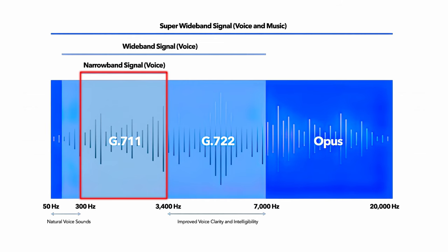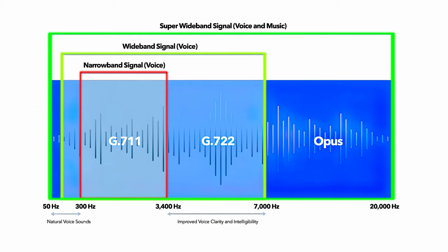Audio codecs also determine audio transmission signal frequency in HD voice. Landlines have a narrowband audio frequency, which means they only capture some of the many tones and pitches of human speech. But HD voice uses wideband audio frequencies that capture the many ranges, pitches, and tones of the natural human voice. This image shows just how much of an advantage wideband signals have over the narrowband signals of the traditional PSTN.